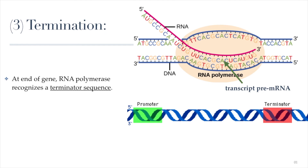The final stage is called termination, when RNA polymerase knows to stop copying the DNA into RNA. This is extremely important — otherwise RNA polymerase would continue reading beyond the gene, producing an RNA much longer than needed, adding way more amino acids than necessary. The pre-mRNA, or transcript, is released once that terminator sequence is reached.